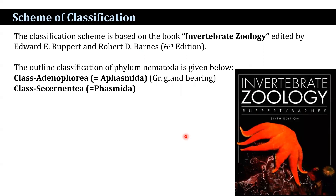The present classification scheme is based on the book 'Invertebrate Zoology' edited by Edward Ruppert and Robert D. Barnes, sixth edition. The phylum Nematoda is divided into two classes: class Adenophoria, where 'adeno' means gland-bearing, and class Secernentea. The Adenophoria does not have phasmids, whereas the Secernentea does have phasmids — so they are also known as Phasmida. The nematodes also have 14 orders.